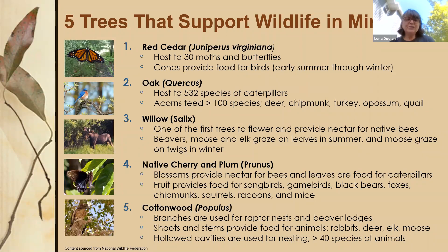Acorns feed over 100 species of animals — oaks are considered the cheeseburger of the forest because they're among the first trees to flower in the spring and provide critical nectar to early emerging bees. Their twigs are also a critical source of food for moose in the winter. Native cherry and plum tree leaves provide food for caterpillars, their spring blossoms provide nectar to bees, and their fruits feed songbirds, game birds, small mammals, and black bears.